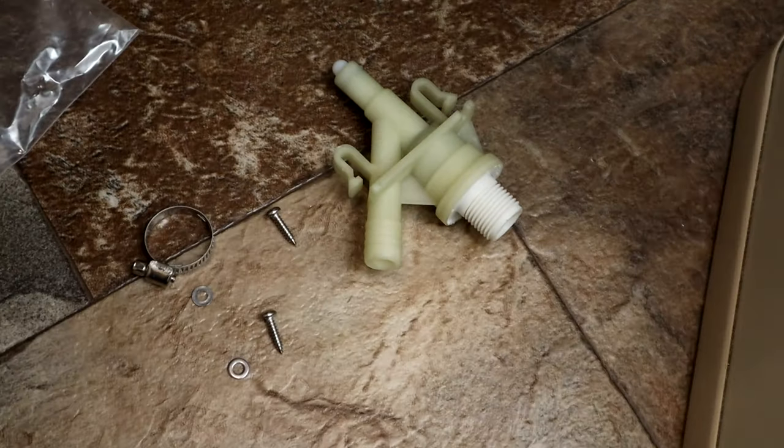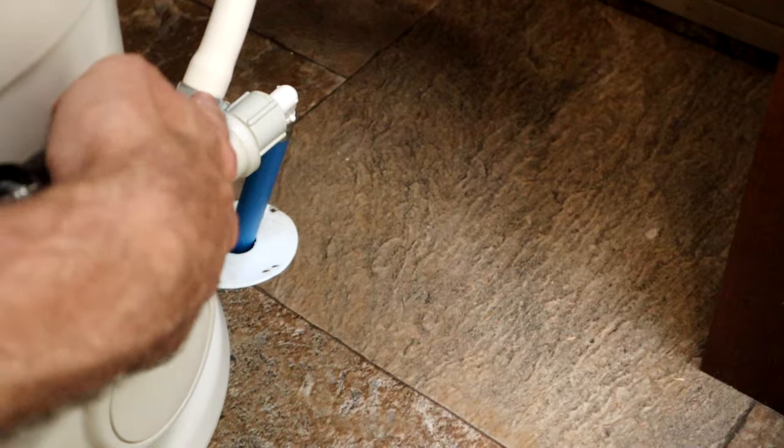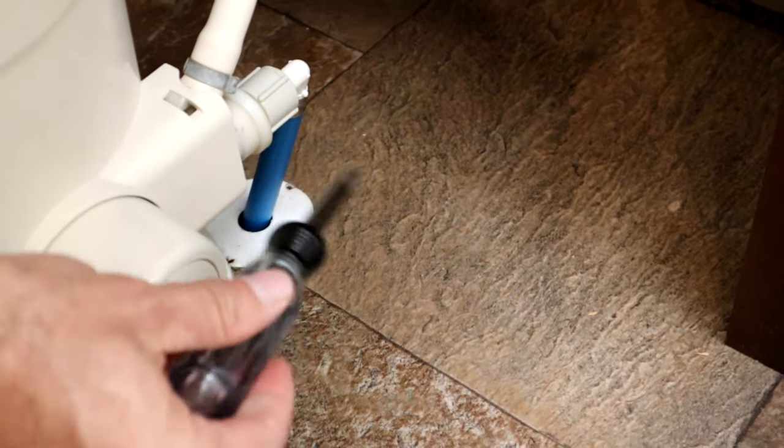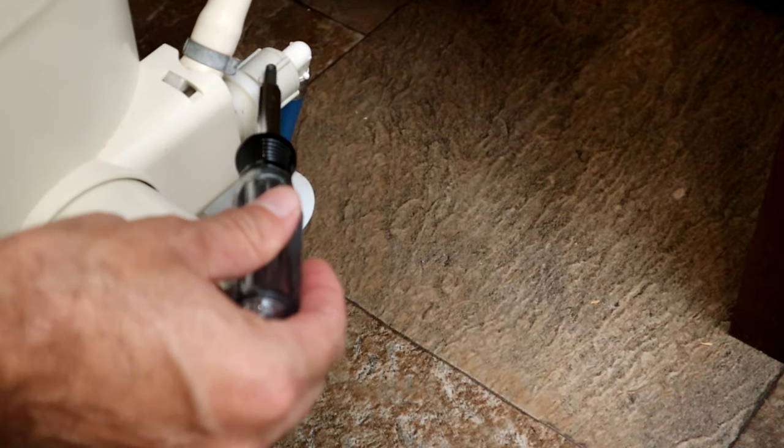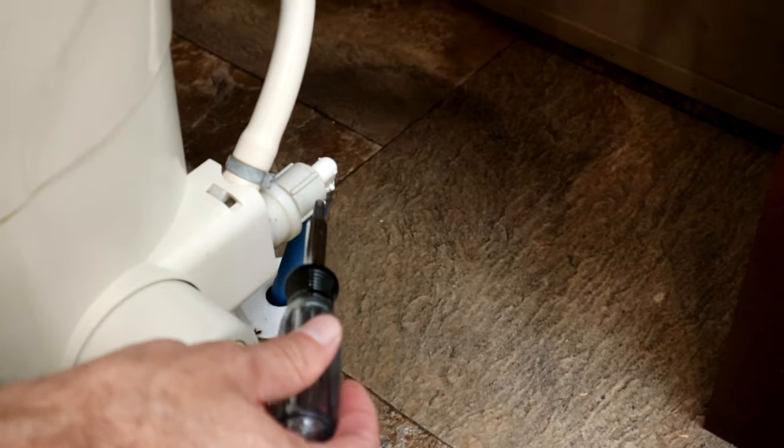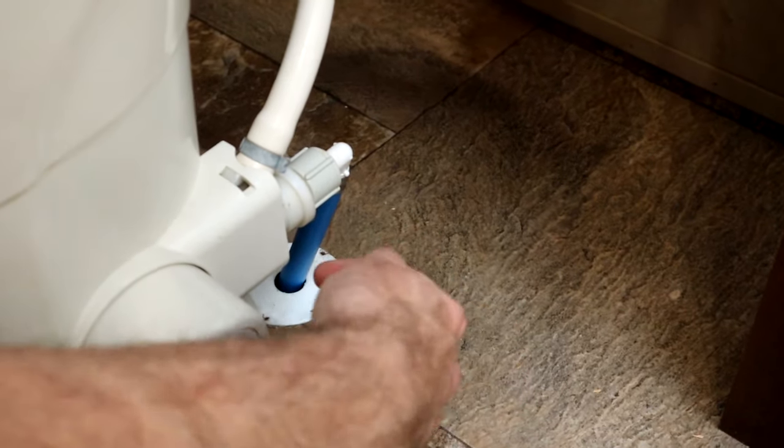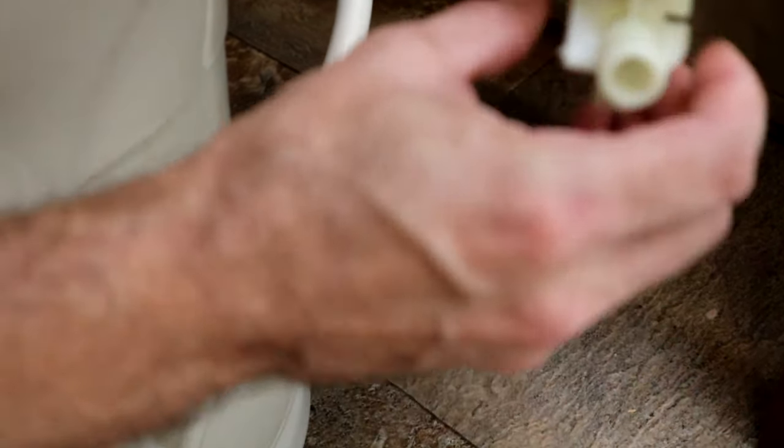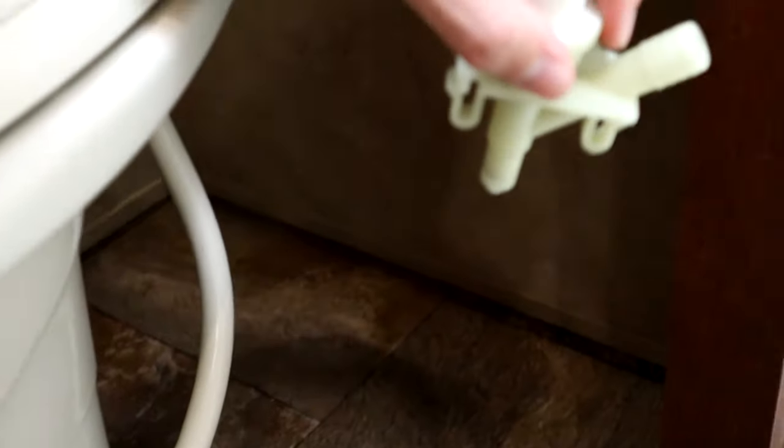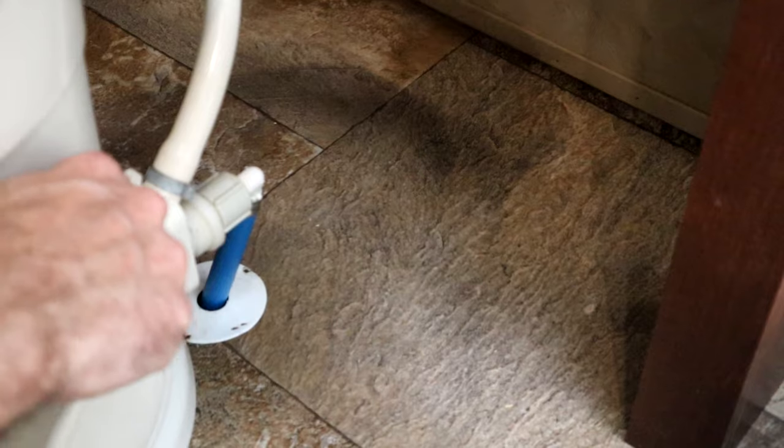So the old unit has one of these crimped connectors on it which you're going to have to cut off eventually. It has the water line coming in which is just a twist off, which you're going to need some channel locks or something like that. And then there's two screws right here and right here on the back of the unit. And when you unscrew those and then pop these clips out, this whole unit should slide out. So let's do that next.